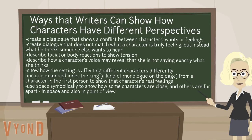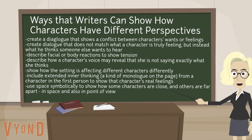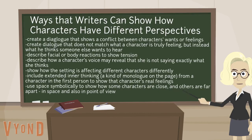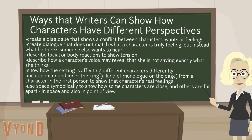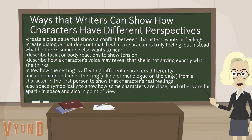Describe facial or body reactions to show tension. Describe how a character's voice may reveal that she is not saying exactly what she thinks. Show how the setting is affecting different characters differently. Include extended inner thinking — a kind of monologue on the page — from a character in the first person to show that character's real feelings. And use space symbolically to show how some characters are close and others are far apart in space and also in point of view.